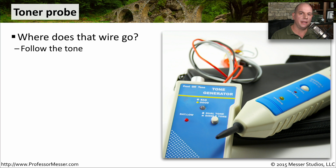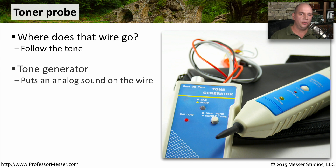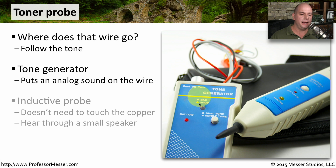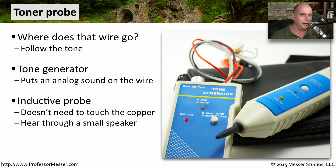That's when you would use something like a toner probe — a device that helps you find wires wherever they happen to be. A toner probe is really two different devices working together. One is the tone generator, whose job is to put a signal on the wire that you're able to hear — usually an oscillating tone. To hear that tone, you need an inductive probe like the one here. The inductive probe doesn't need to physically touch the copper; it just needs to get close, and it will pick up that oscillating tone signal coming through that wire.